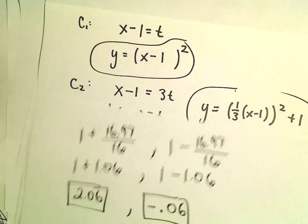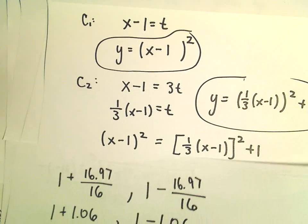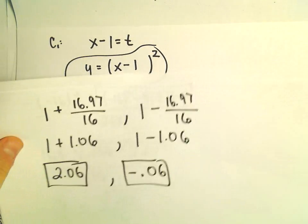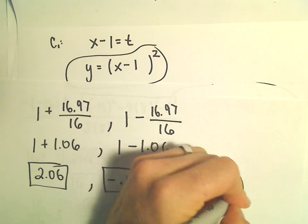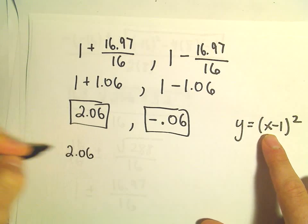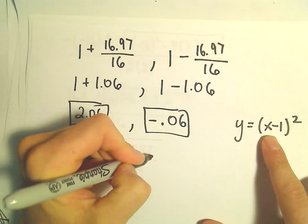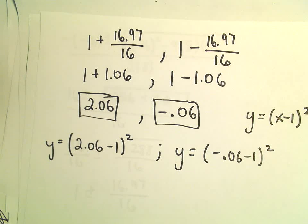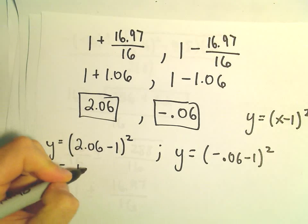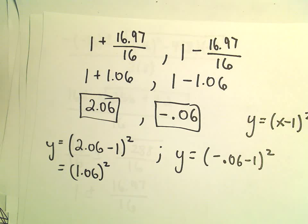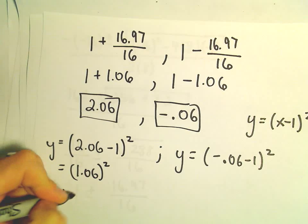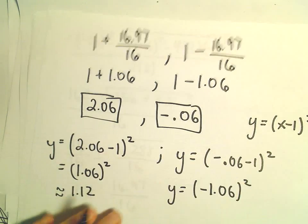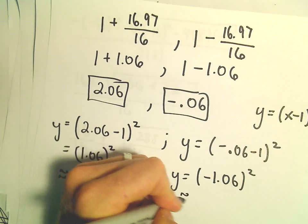All right, so those are going to be the x-coordinates of the points of intersection. So really, all we have to do now is figure out the corresponding y values. Again, we can go back to either equation. I'm going to use the first one just because it's a little more simple. So we had y equals x minus 1 squared. Well, all right, so if we plug in 2.06, we'll have y equals 2.06 minus 1 squared. And then we'll have y equals negative 0.06 minus 1 squared. So, kind of interesting. So let's see, 2.06 minus 1, that's just going to be 1.06 squared. So, 1.06 squared. Again, I'm getting this to be roughly 1.12. And when we do, I guess we'll get negative 1.06 squared on the right side. Well, if we square that, I guess we should, again, get roughly 1.12.